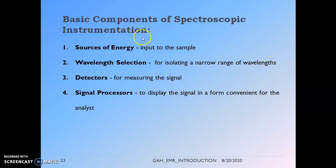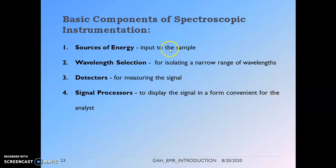Coming to the basic components of a spectroscopic instrument: there are four different basic components. The first is the source of energy. The second is the wavelength selector, also called a monochromator. The third is the detector. The fourth is the signal processor. The sources of energy generate the required electromagnetic radiation for a particular sample or observation. The wavelength selector narrows down the wavelengths to exclude overlapping regions and select a very precise narrow range of wavelengths — and the sensitivity of the instrument depends on the wavelength selectors and detectors.